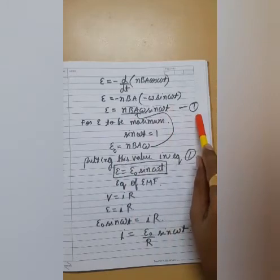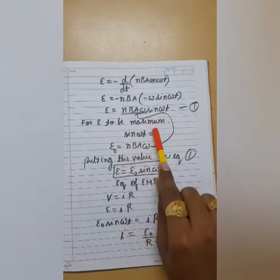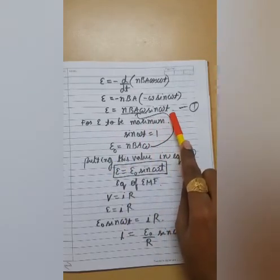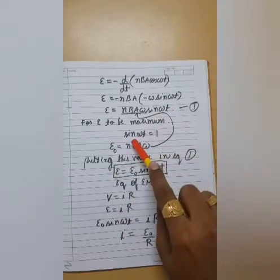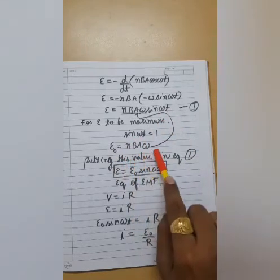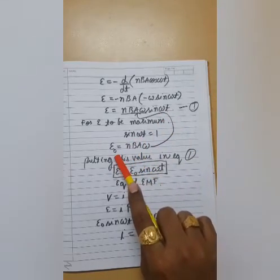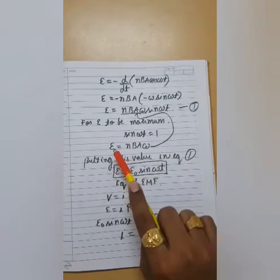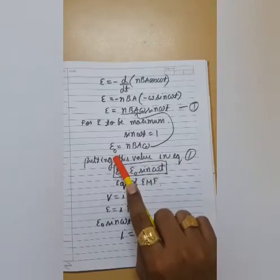Now this would be our equation number 1. Further, if we want this EMF to be maximum, then this sin omega t should be 1. So if we make sin omega t equal to 1, we are left with e is equal to nBA omega, which is obviously a maximum EMF. Therefore, we have put a knot over here. That is, this is the peak EMF.